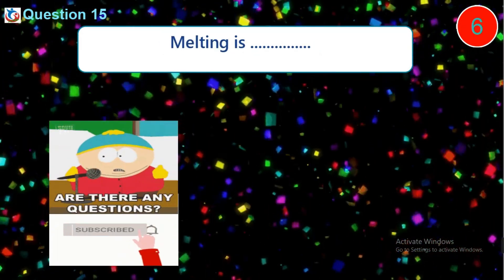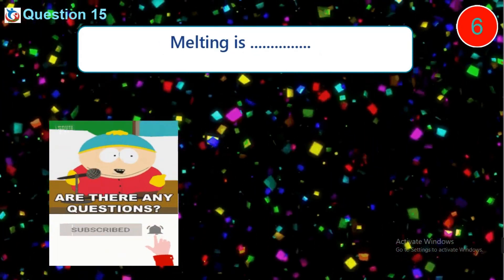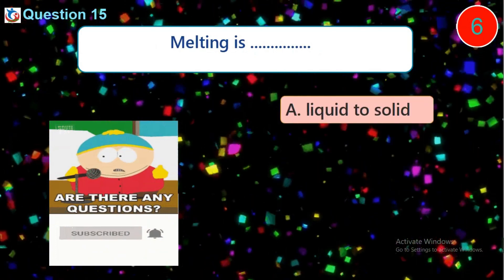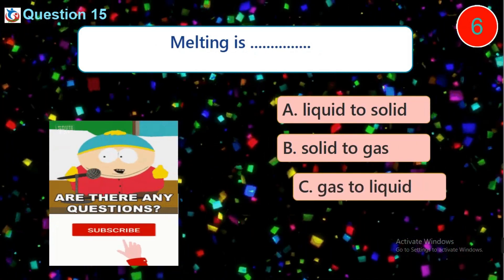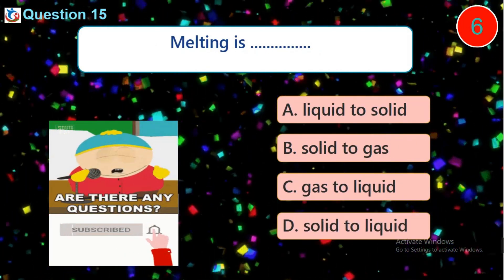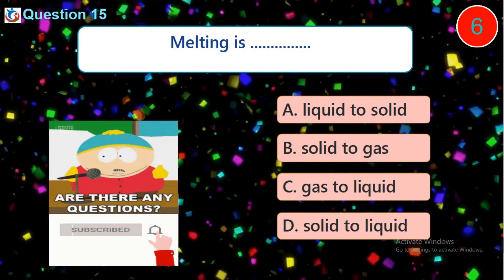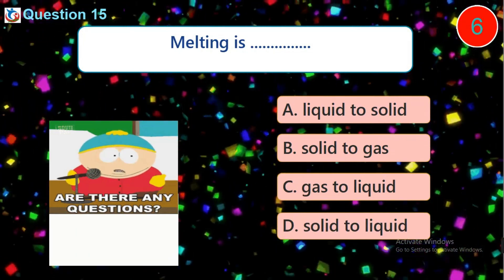Question 15. Melting is dash. A. Liquid to solid. B. Solid to gas. C. Gas to liquid. D. Solid to liquid.